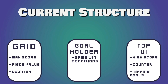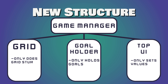So what we're doing with the refactor is taking our current structure and changing it so that instead of having these three objects interconnected with one another, we're going to add an observer object called the game manager. The game manager is going to tell everything what they need to know, making sure they're only getting the information they need so they're not holding extra information that could potentially cause a problem down the road. The game manager will ensure the grid only does grid stuff — level info, piece scores, and max score for the level will be held in the game manager. The goal holder will only hold the goals, and information about whether or not the goals are met will be held in the game manager. The top UI will only set the values. This also makes it easier to create new levels because you only need to set things in one place.